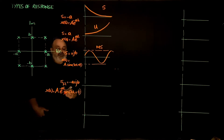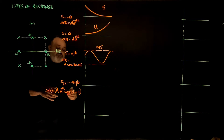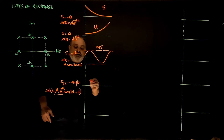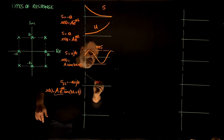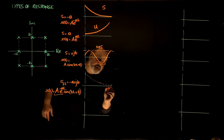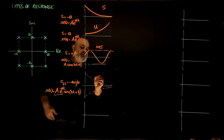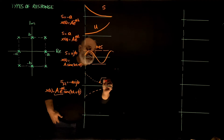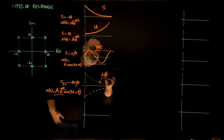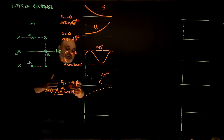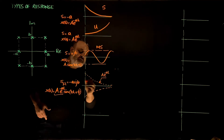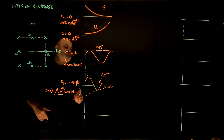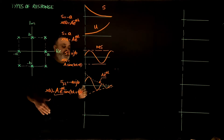...sine of b·t plus some phase, covering the sine and cosine possibilities. The amplitude of this sine wave is exponentially decaying, so I have an envelope for the sine wave that exponentially decays. Multiplying e to the negative a·t by the sine gives a sine wave that decays to zero with time. This response is stable.